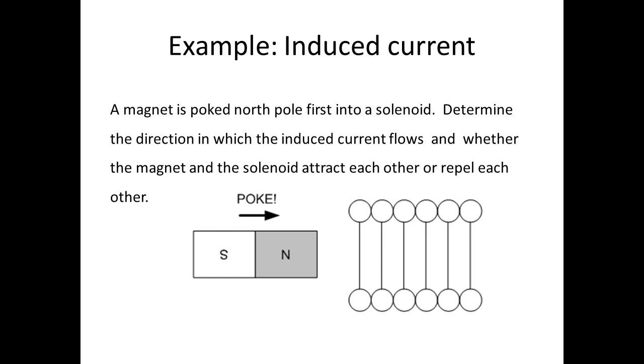Here's an example of induced current and induced EMF. A magnet is poked, north pole first, into a solenoid.